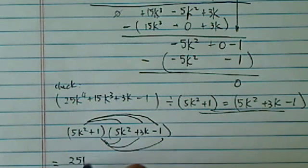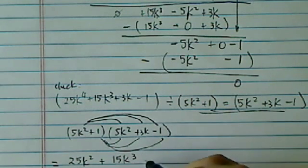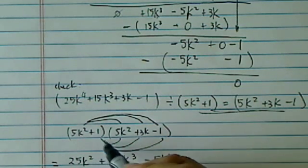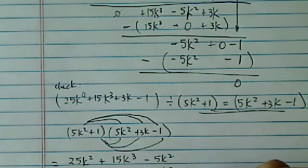So the 25k to the 4th, that's the first overhead, plus 15k cubed, then minus 5k squared. I'm going to put the belly underneath instead of writing in the same line. And the reason is, I know I'm going to be combining them anyhow, so lining up the like terms makes my life a little easier.